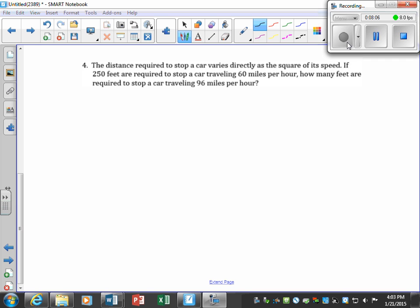Alright, so let's try our hand at a word problem. The distance required to stop a car varies directly. The distance varies directly, so I know I'm going to have my k, and then the square of its speed. So that would be speed squared. So we determine our equation, and then now we start substituting it. If 250 feet, which is our distance, is required